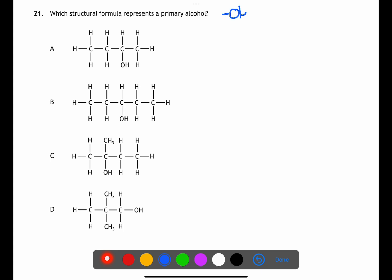Question 21 we're looking for the structural formula for primary alcohol. Primary alcohol has the hydroxyl group at the end of a chain on carbon 1. In A this is on carbon 2 making it a secondary alcohol. On B it's on carbon 3 also a secondary alcohol. On C it's at a branch point making a tertiary alcohol but on D it is on carbon 1 making it a primary alcohol.